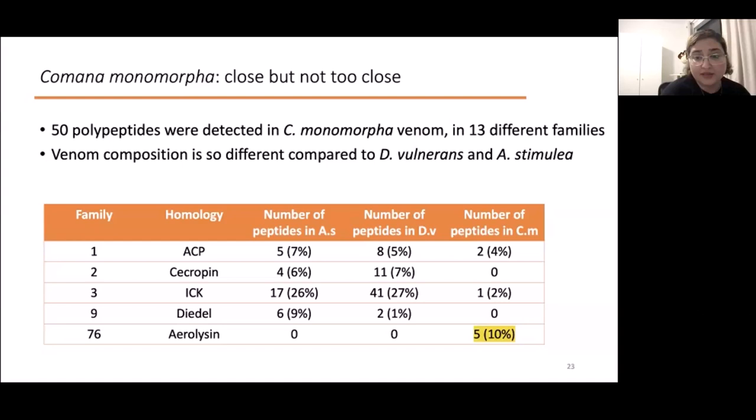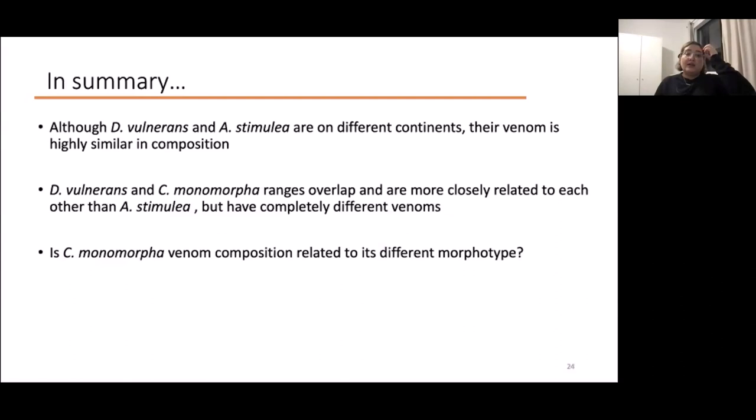To summarize, D. vulnerans and saddleback are on different continents but their venom is highly similar in composition. But D. vulnerans and Comana monomorpha, which are occurring in the same region in Australia and are more closely related to each other, have completely different venoms.